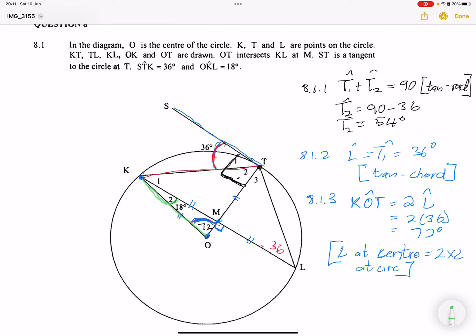For 8.2, what I'm going to do is say, well, for angle KMT, which is this guy over here, KMT is equal to angle K2 plus angle KOT. Now why is that? We know that this is the exterior angle of a triangle.